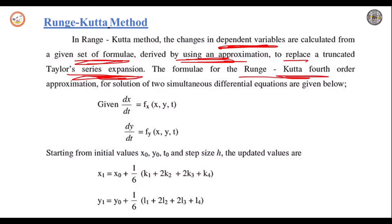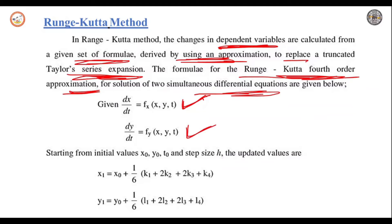The formula for the Runge-Kutta method for fourth order approximation, for the solution of two simultaneous equations, are given by: dx/dt = fx(x, y, t) and dy/dt = fy(x, y, t), where x, y, t are the dependent variables.